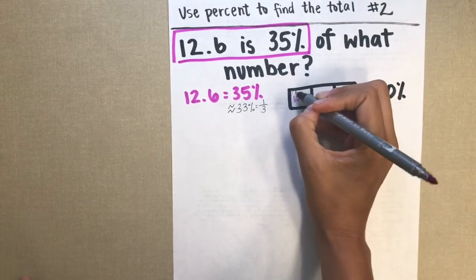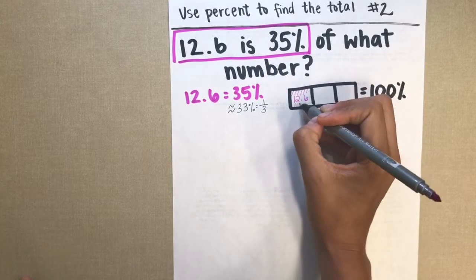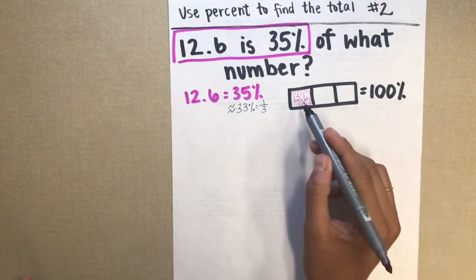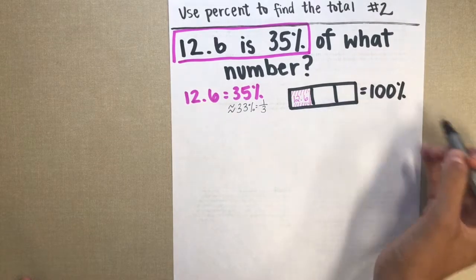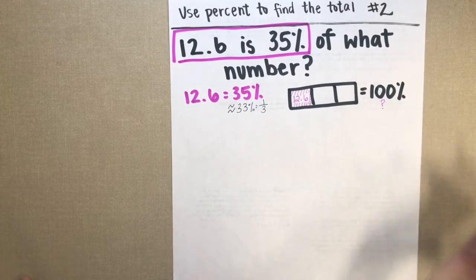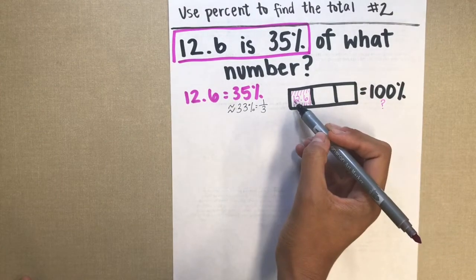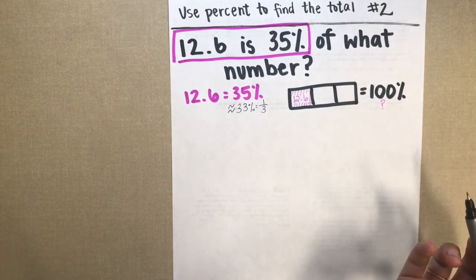So I know that this chunk here is equal to 12.6. And I want to know what is the total amount of three of those put together. So what's this total equal to? So you could estimate.